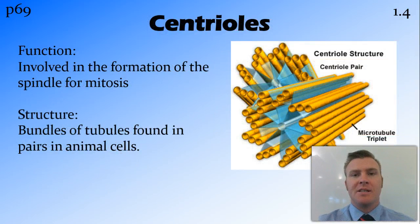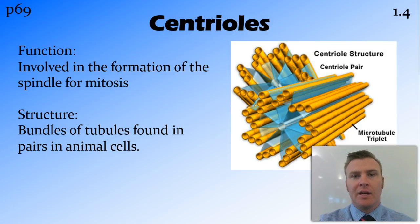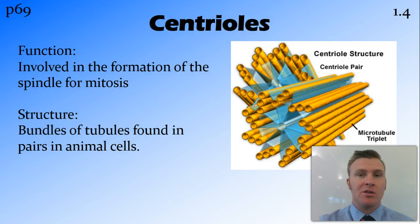Centrioles consist of bundles of tubules and they're found in pairs in animal cells only. Their role is in the formation of spindles for mitosis, and we'll look into mitosis in more detail in a later video.